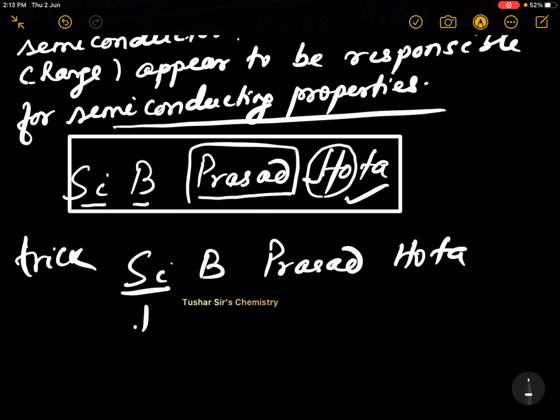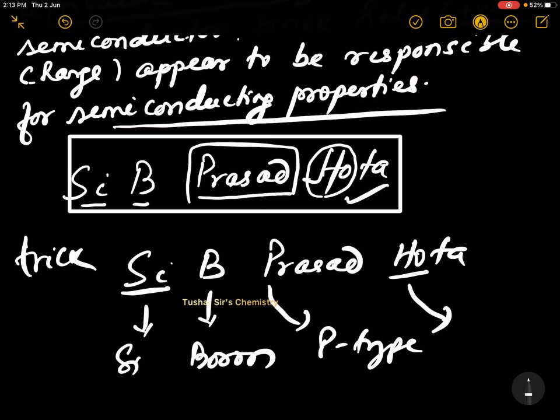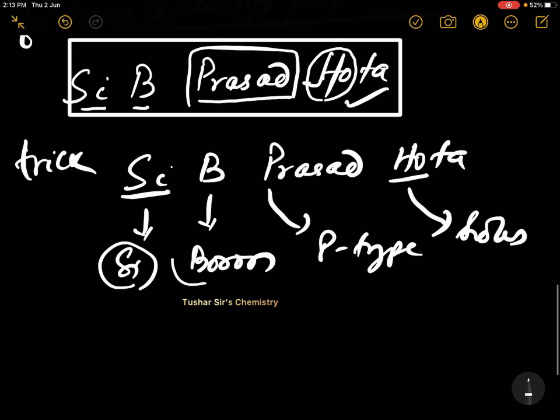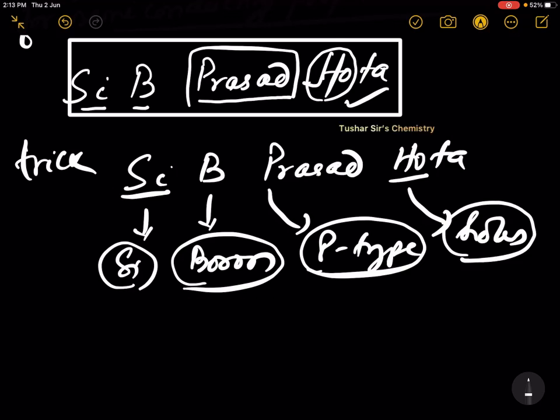For Si, silicon. For B, boron. For P, P-type. For HO, holes. So, I can say silicon doped with boron forms a P-type semiconductor and the conduction is due to holes. And the movement of holes is opposite to the flow of electrons.